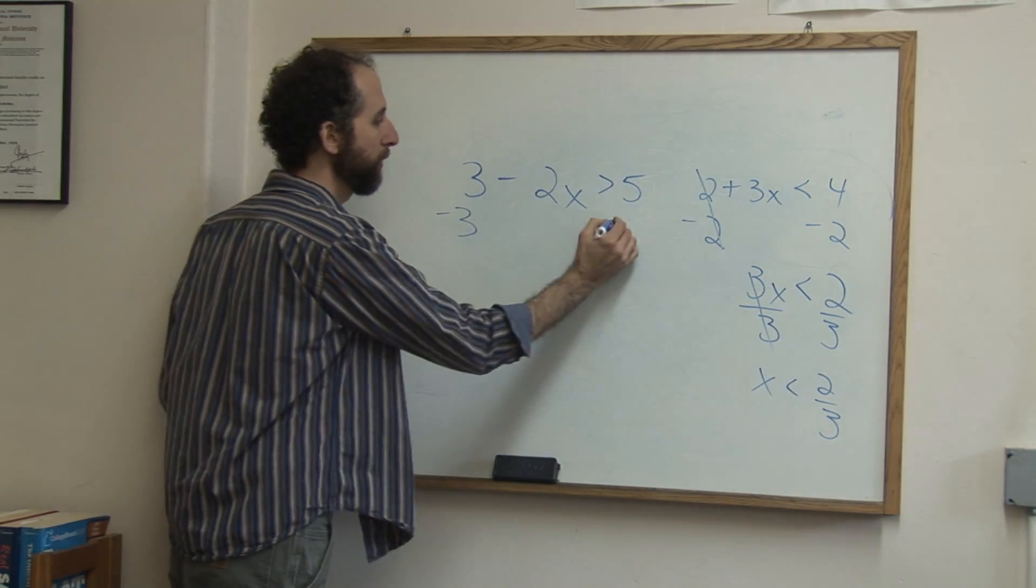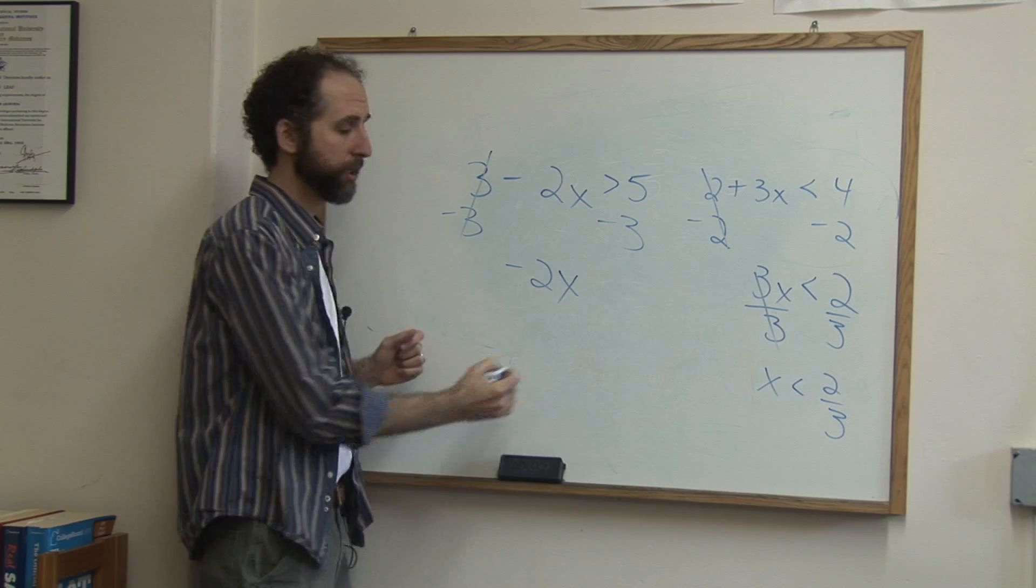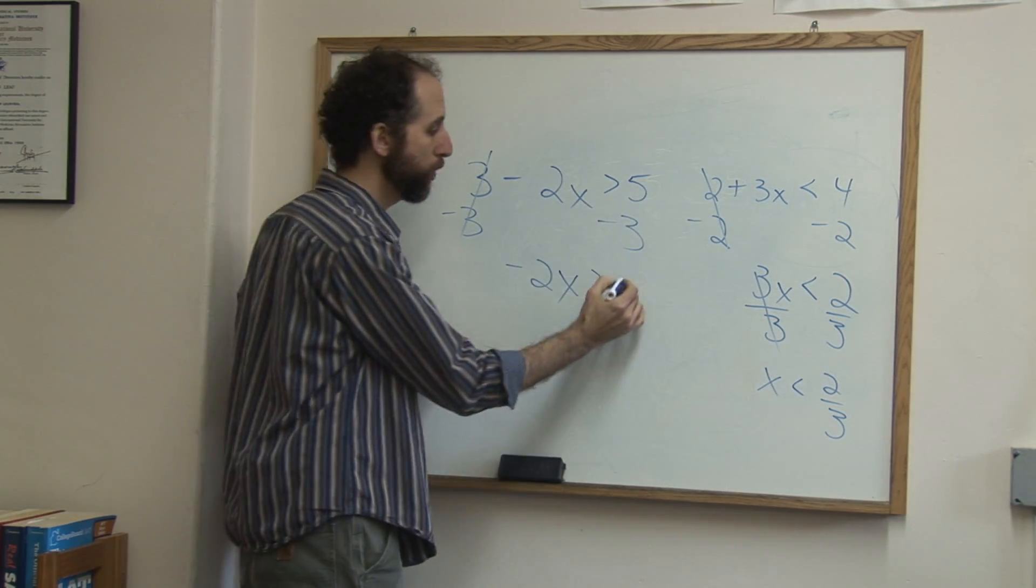So we'll subtract 3 from both sides, 3 minus 3 cancels. Negative 2x greater than 5 minus 3 is 2.